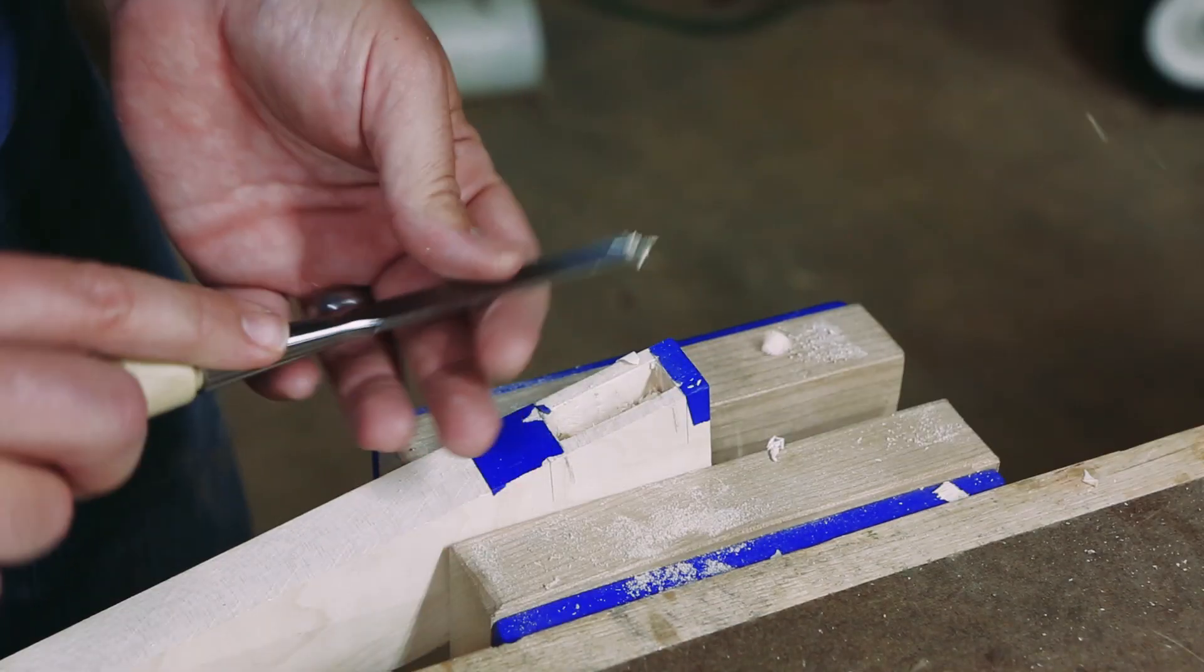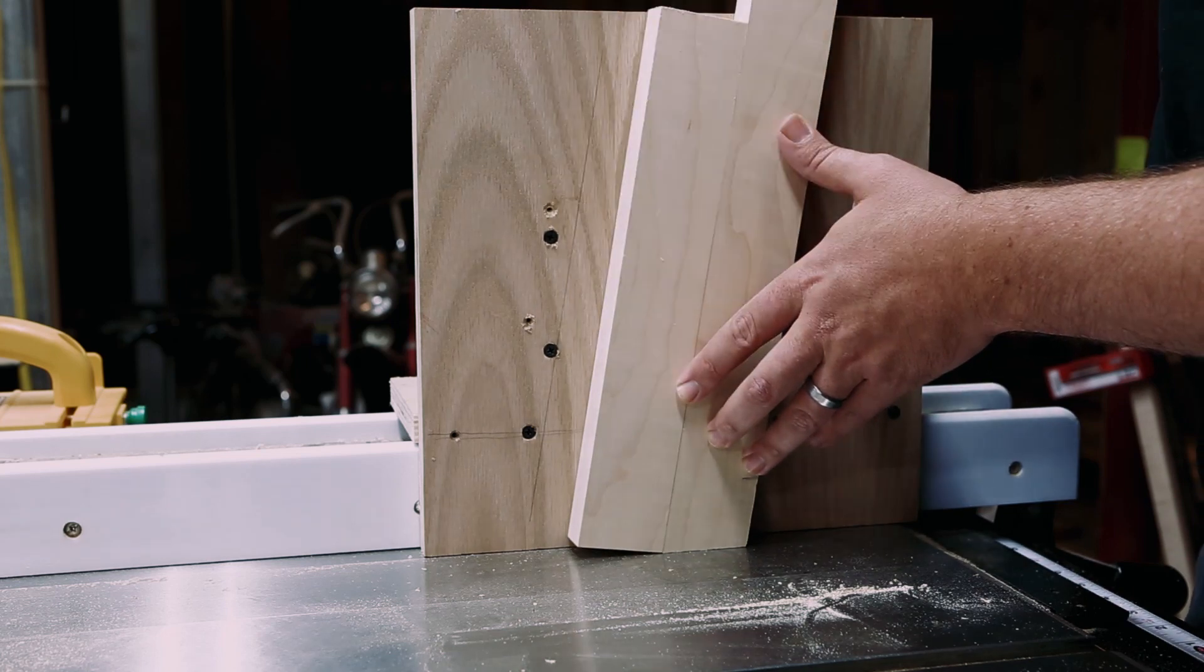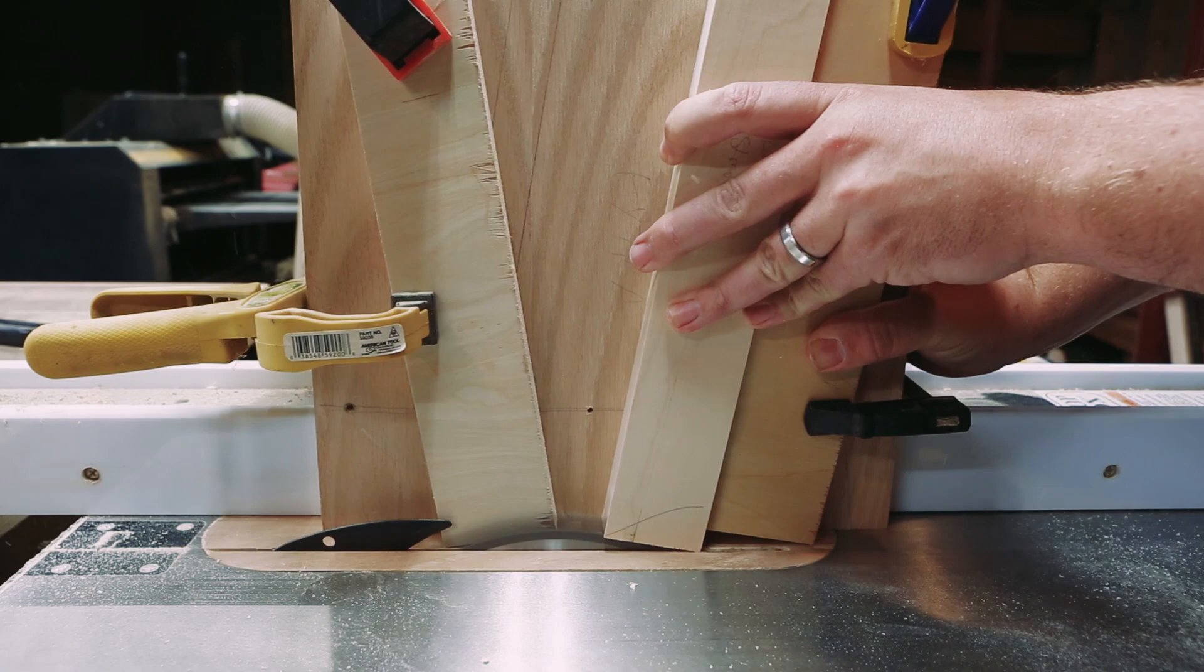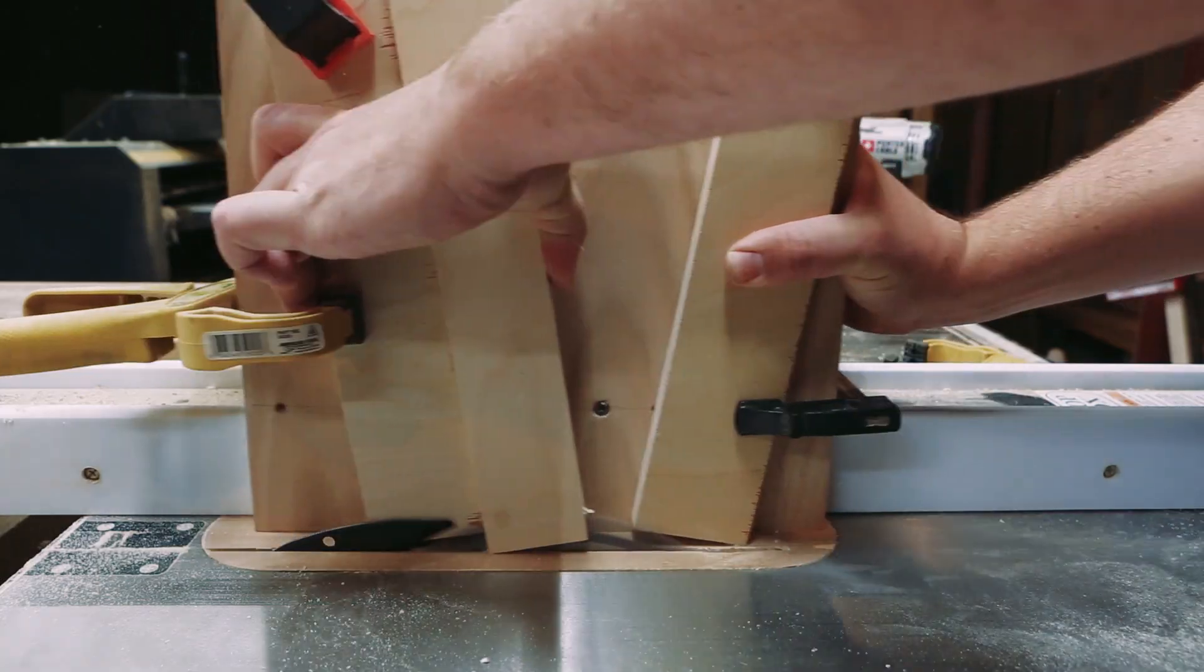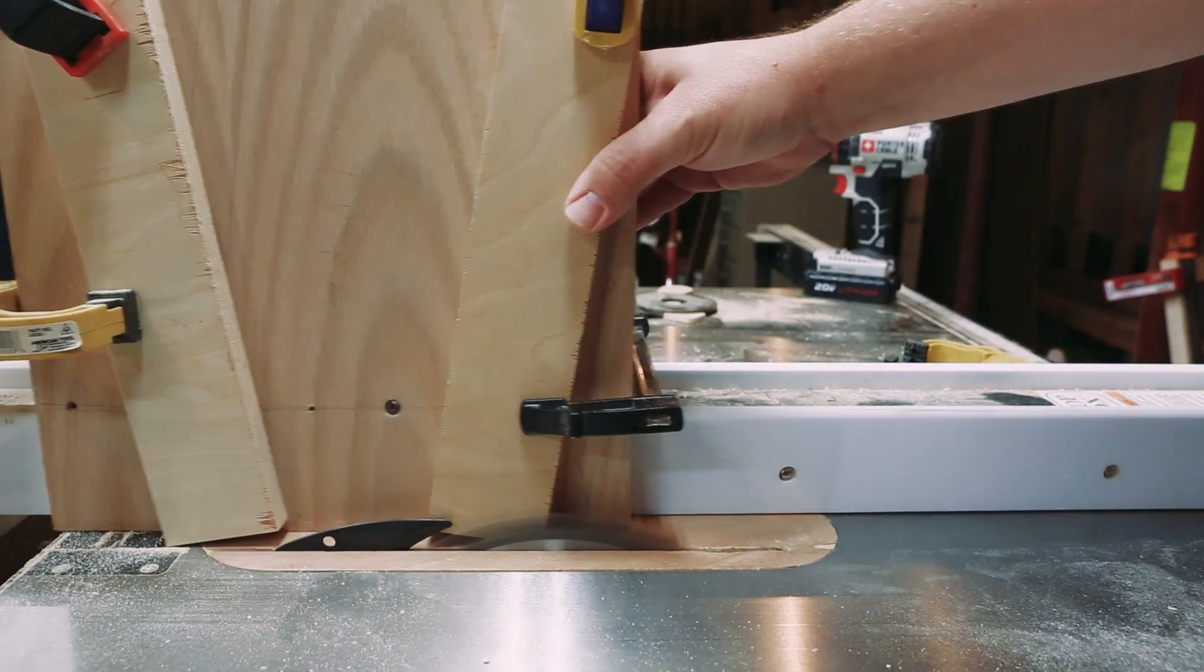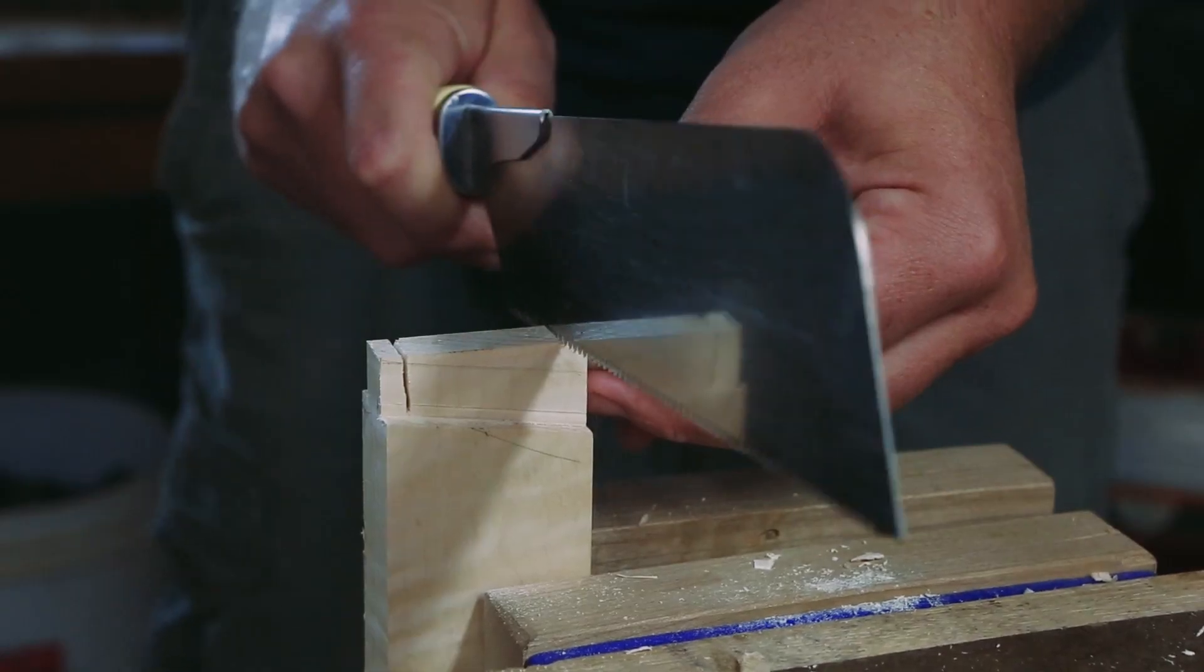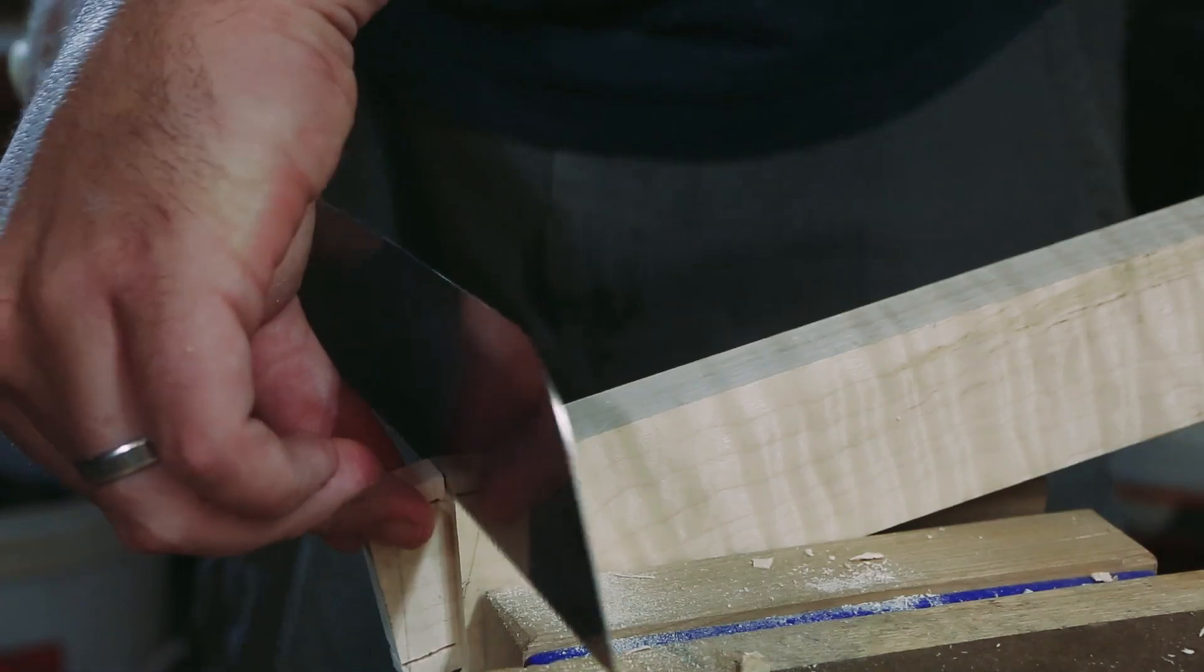For the angled tenons I made a jig to the table saw and clamped some scrap to the jig. Using a leg as a reference, I cut the cheeks with the jig, then cut the shoulders with the miter gauge.